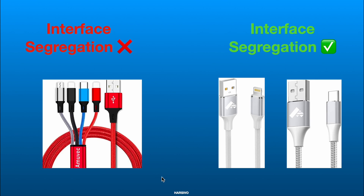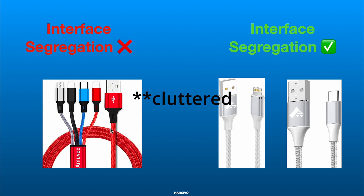Now let's take another example — the universal charger. These universal chargers are very famous these days; one charger will have Type-C, Lightning cable, and everything. Though they are convenient, this does not work well in the long run. With Interface Segregation you will have different charging cables for different uses. These separate charging cables are in compliance with Interface Segregation, whereas the clustered charger breaks the Interface Segregation Principle.